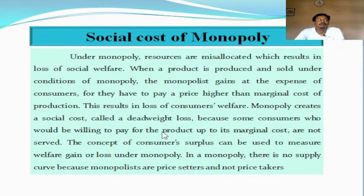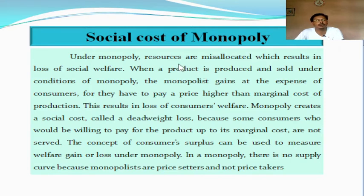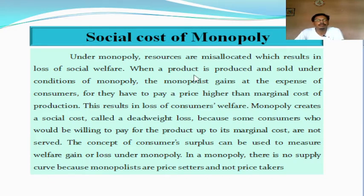Another peculiarity is known as social cost of monopoly. Cost means sacrifice — the social cost means the society is suffering or losing something in case of monopoly production. Under monopoly, the monopoly producer has restriction of its output. As a result, the monopoly seller misallocates his resources, which causes loss of social welfare. When a product is produced and sold under conditions of monopoly, the monopolist always gains at the expense of consumers — the monopoly seller is enjoying profit while consumers are paying a higher price than the actual.